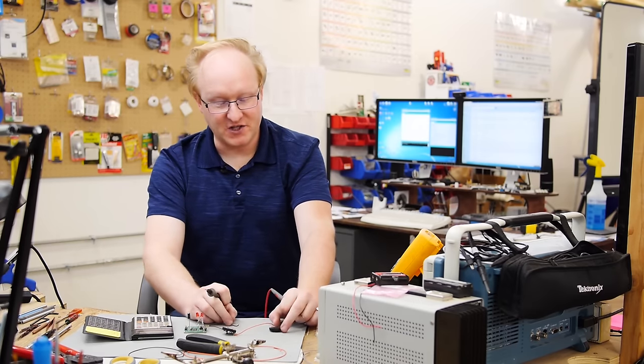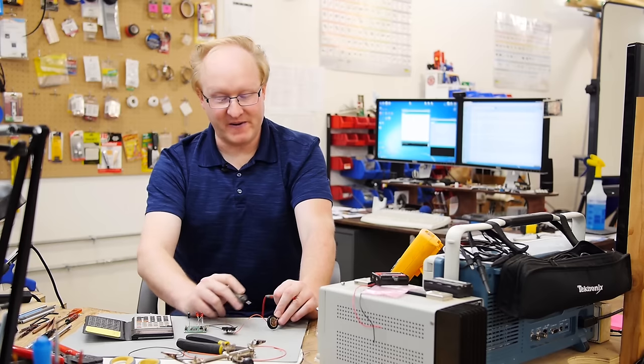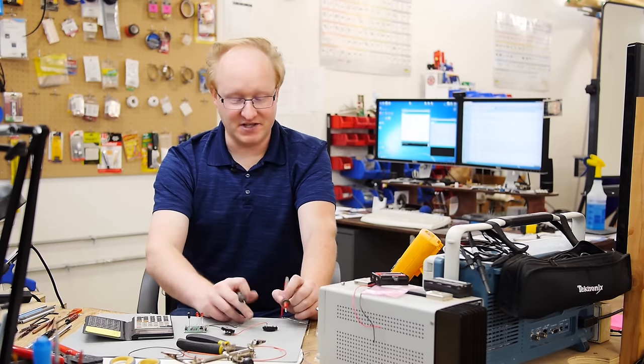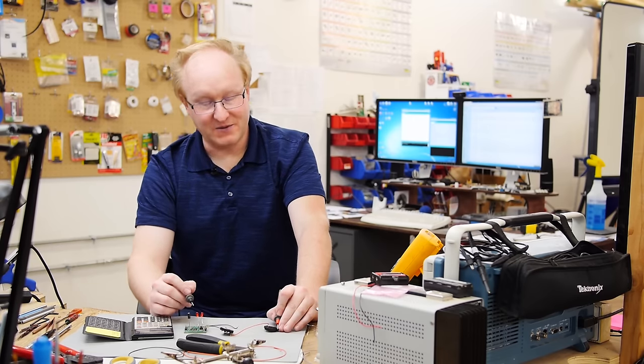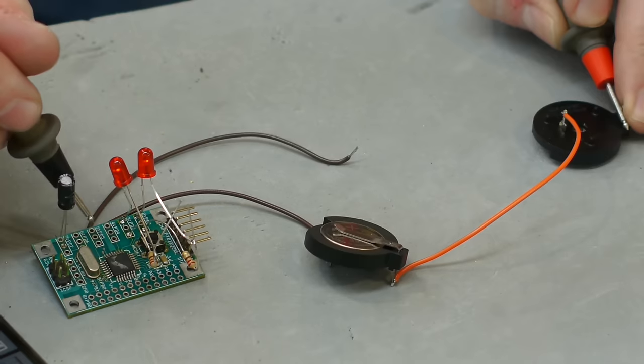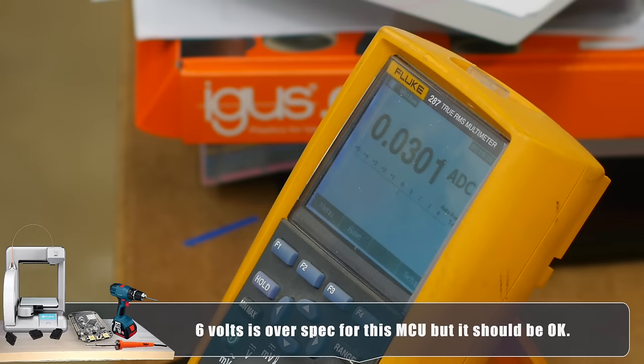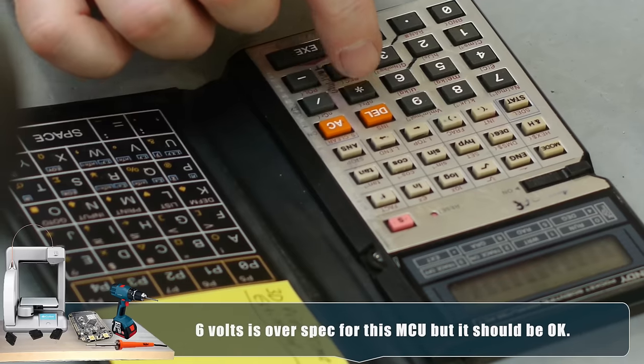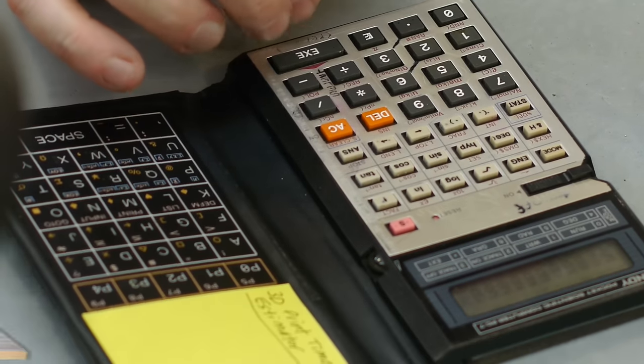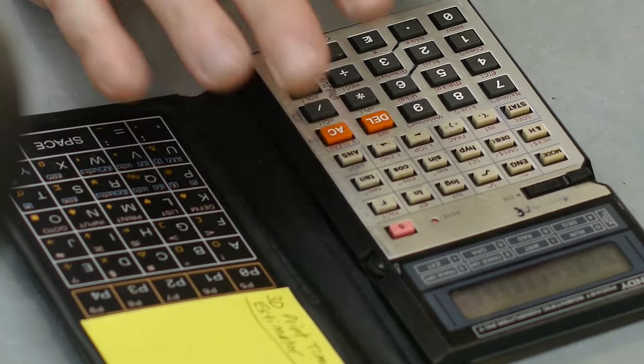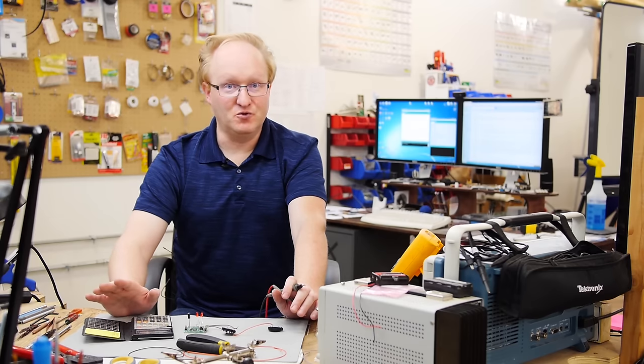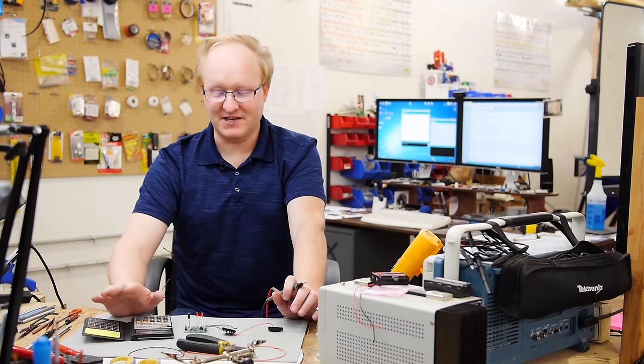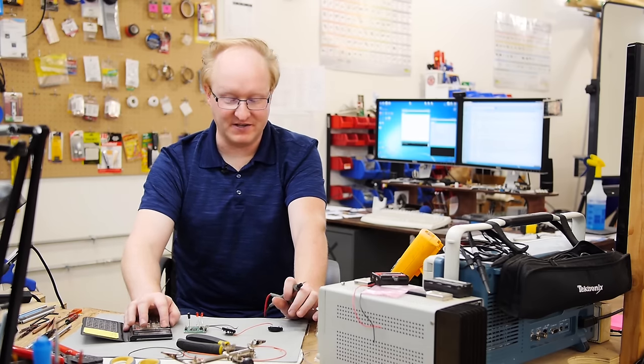We could also increase the voltage by going in series from this battery to this battery, and that will give us 6 volts total. Let's see what the current draw is at 6 volts. It's gone up to about 30 milliamps. Again, 220 divided by 30, 7.3 times 0.8, about 5.8 hours. So at a higher voltage, you lose a lot of your battery capacity because you're draining them faster.